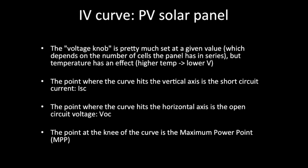The voltage knob is more constant than the current knob. The amount of sun has a large effect on raising or lowering the whole curve. For voltage, it's a little more fixed, but temperature does affect the voltage. If you get a higher temperature, you actually get a lower voltage, which reduces the power.